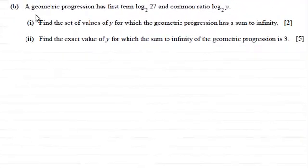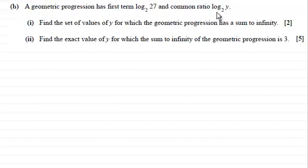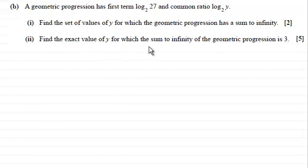In this question we're given that a geometric progression has first term log base 2 of 27 and a common ratio log base 2 of y. We've got two parts: first, find the set of values of y for which the geometric progression has a sum to infinity, and second, find the exact value of y for which the sum to infinity of the geometric progression is 3.